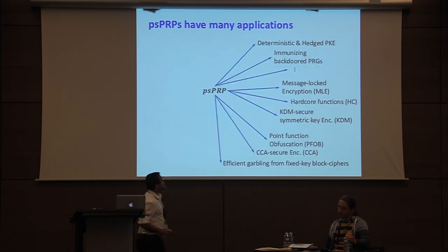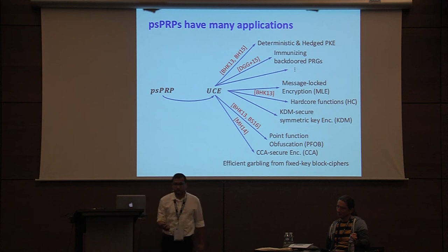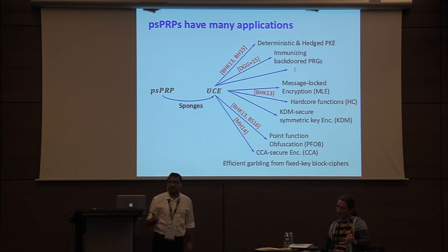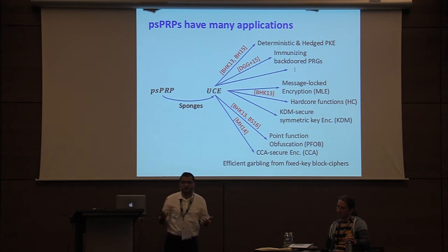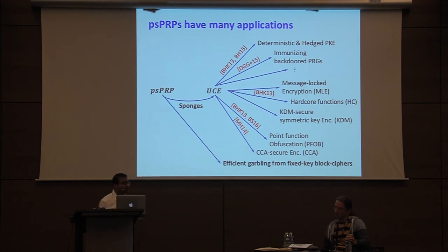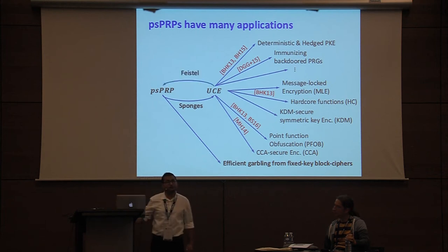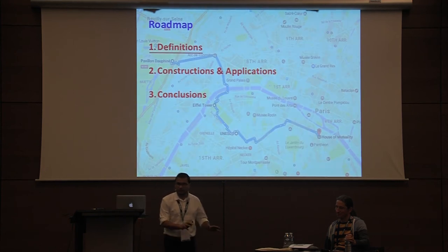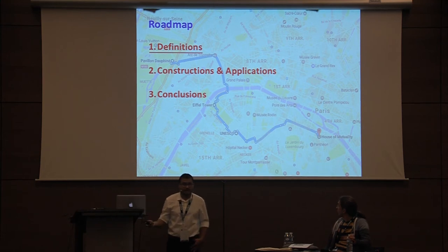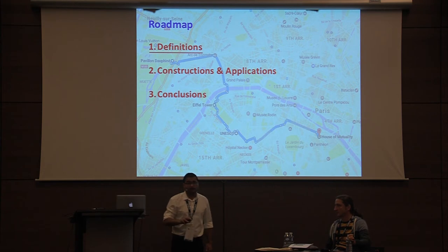We show in the paper that PSPRP implies a lot of applications. We recover a few of these applications by constructing UCE hash functions, which are known to imply them from previous work. In particular, we construct UCEs via existing practical constructions like sponges. We also investigate what applications can be directly instantiated from PSPRPs, and for that we study efficient garbling from fixed-key block ciphers. UCEs via the sponge construction also imply PSPRPs, giving some validity to the existence of PSPRPs. The plan of the talk is to give the PSPRP notion first, then constructions and applications, and finally many open questions.